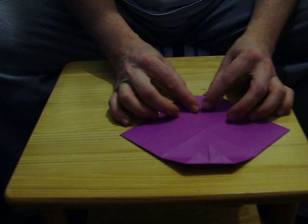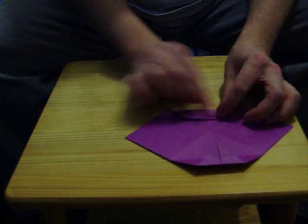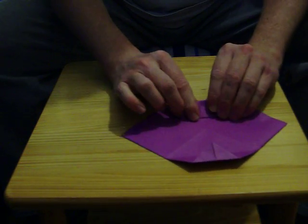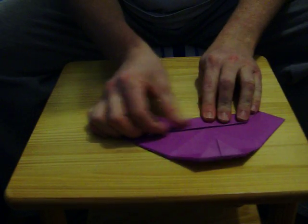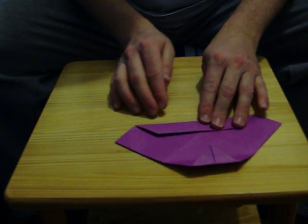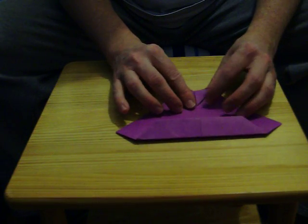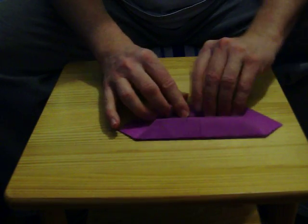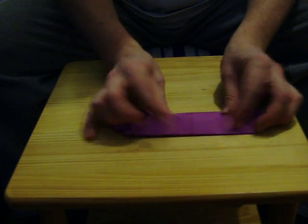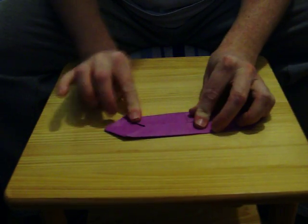Now fold that part over once and then again, twice, to reach the center of the paper. Turn over and do exactly the same on the other side. Fold over once, then twice to reach the center of the paper. Make sure you crease firmly all the time.